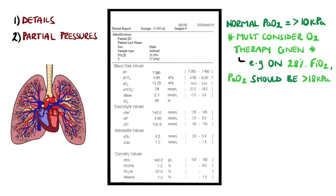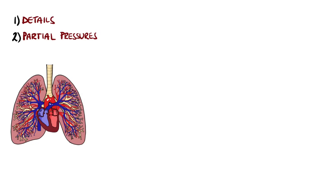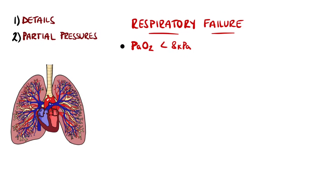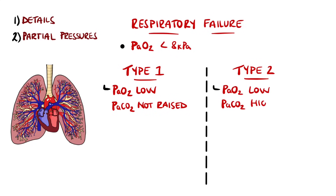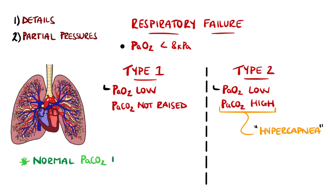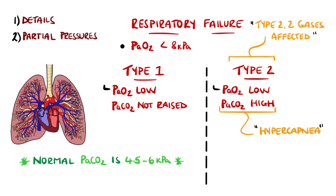If the PO2 is below 8 kilopascals, this is considered respiratory failure, of which there are two main types. Type 1, where oxygen levels are low but carbon dioxide levels are not elevated. Or Type 2 respiratory failure, where carbon dioxide levels are high, called hypercapnia. The normal range for PCO2 is roughly 4.5 to 6 kilopascals. An easy way to remember this is that Type 2 has two gases affected.